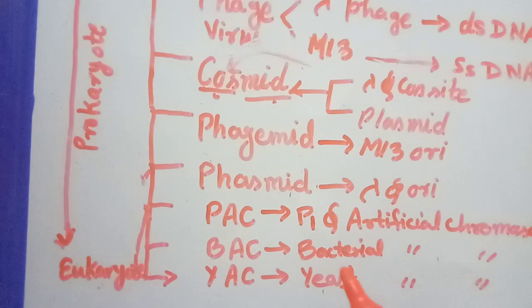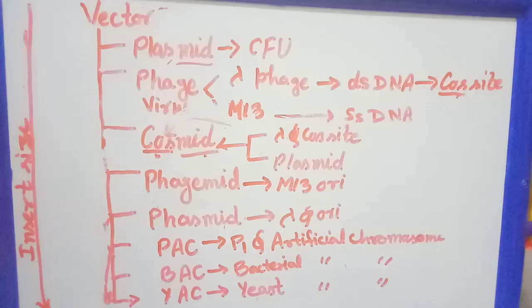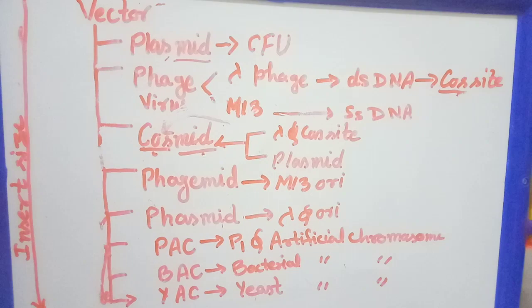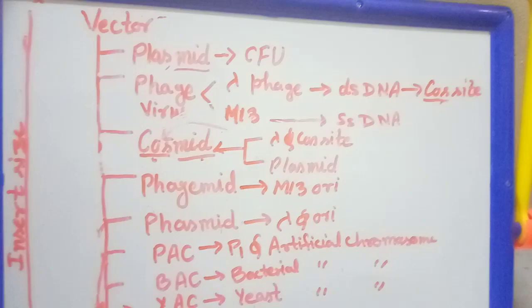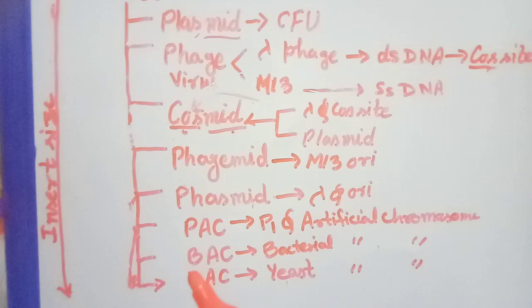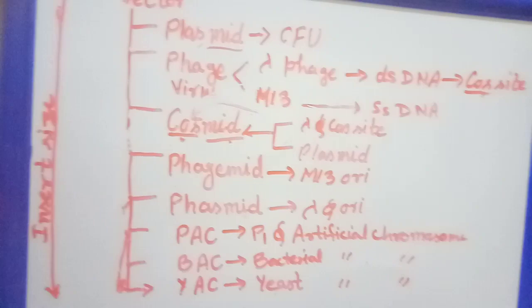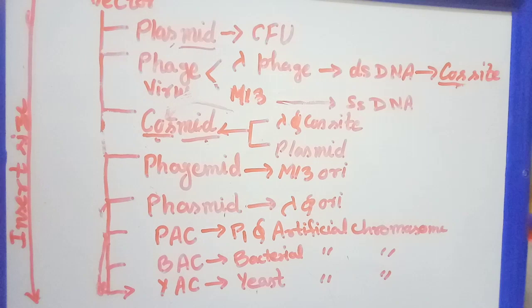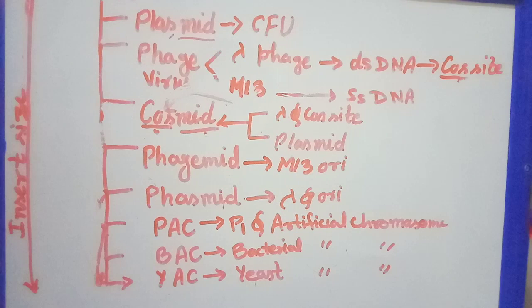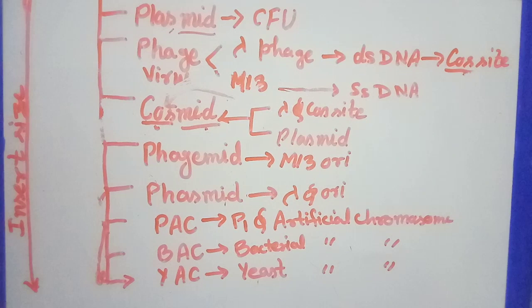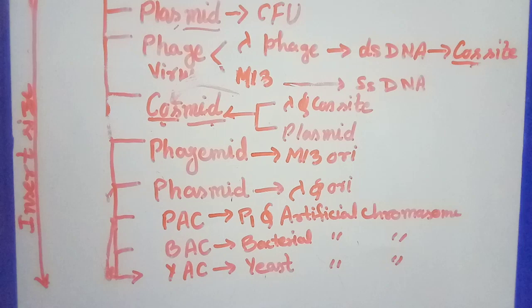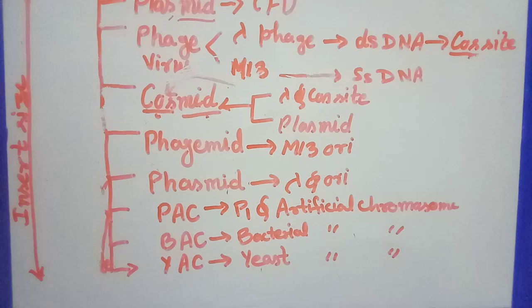In case of vectors, as we are increasing from upward to downward, the insert size is going to be increased. In eukaryotes, there are certain genes which are more in size, more than one kilobase pair, sometimes up to 1000 kilobase pair or 100 kilobase pair.